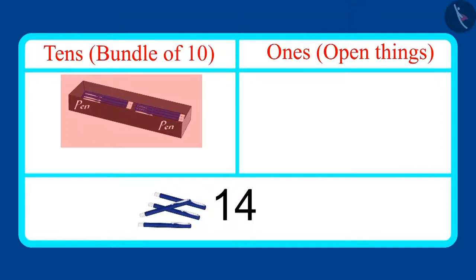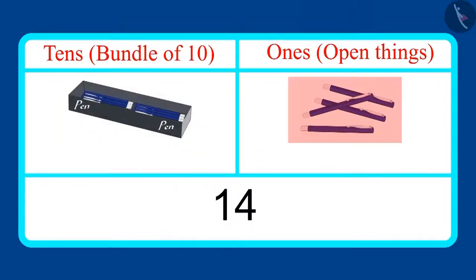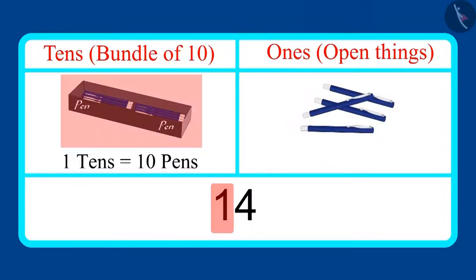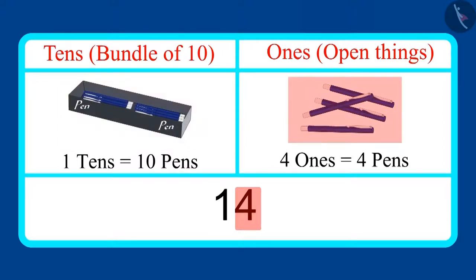This is one bundle of 10 pens and four more pens. That means it has one tens and four ones. Your answer was the same, right? Good.